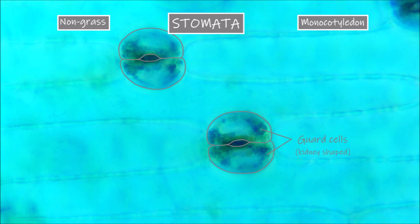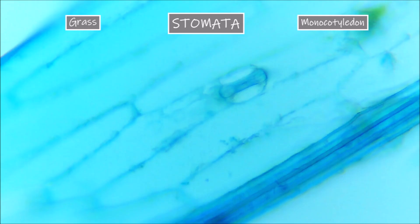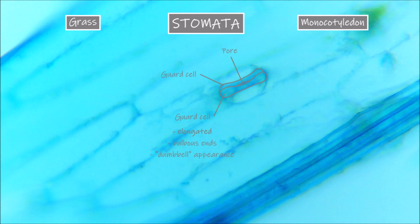These kidney shaped guard cells surrounding the stomatal pores are the typical shape found in dicotyledon plants and many monocots, but some monocots, especially in the grasses, have a different shape. If we now look at the surface of a blade of grass, we can see here the guard cells surrounding the pore are more elongated with bulbous ends, giving a dumbbell-like appearance. The stomatal pore itself is more like a long slit between these elongated guard cells. In these plants the guard cells have the help of subsidiary cells to help control the opening of the stomatal pores. The subsidiary cells flank the guard cells and are actually differentiated epidermal cells.